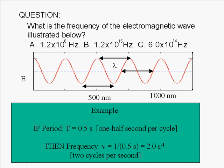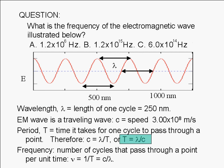For example, if it takes one cycle 0.5 seconds to pass a point, then we expect two cycles to pass every second. Therefore, since period is equal to lambda over c, frequency, which is the reciprocal of the period, is equal to c over lambda.